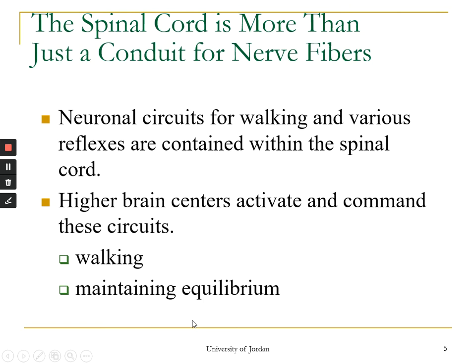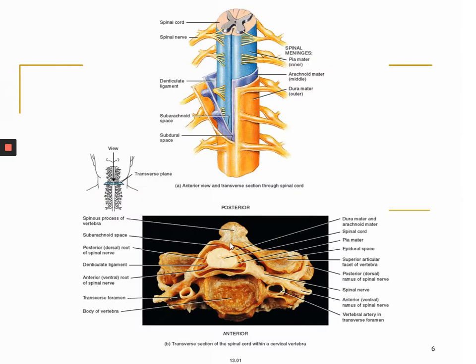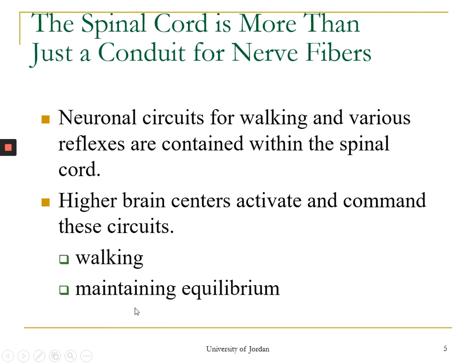The motor system includes the cerebral cortex, spinal cord, brainstem, red nucleus, cerebellum, and basal ganglia. The spinal cord is the lowest area of this motor system — it works as a pathway or conduit for nerve fibers. Neural circuits for walking and various reflexes are contained within the spinal cord. Higher brain centers activate and command these circuits for walking, maintaining equilibrium, and other movements. The muscles involved in equilibrium are called anti-gravity muscles or extensors.